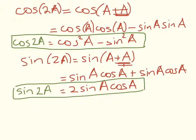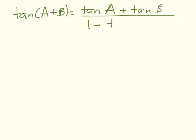The last one I'm going to do is, not surprisingly, tan of 2A. Okay, well, we have tan of A plus B is equal to tan of A plus tan of B over 1 minus tan A tan B.